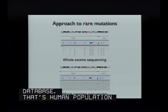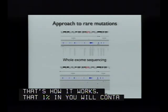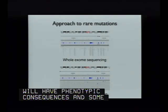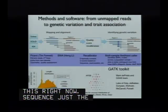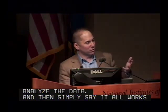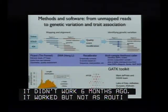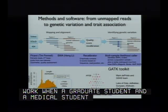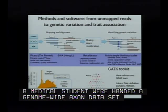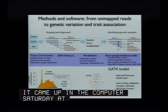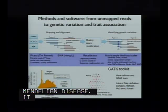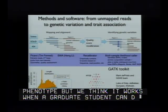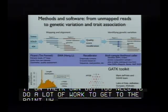Nonetheless, that 1% unique to you will contain many rare variants, some of which will have phenotypic consequences—some large ones. We need methods to do that too, and those tools exist: sequence just the exon or sequence the whole genome. There's about two years of work by about 100 people to figure out how to analyze the data. We knew it was working when a graduate student and a medical student were handed a genome-wide exome data set of two individuals from a Mendelian pedigree on Saturday at noon, and when their PI came in Monday morning, they had identified the gene. It turned out to be a known gene, though not for that phenotype. The fact that a graduate student can do it independently means the technology and methods now exist.